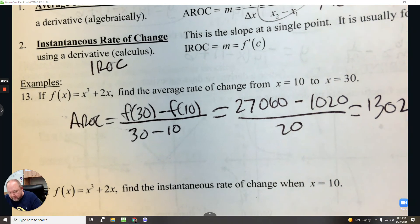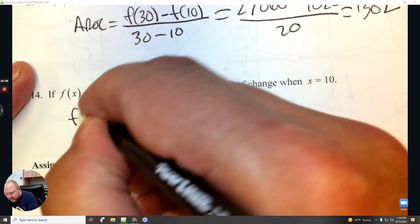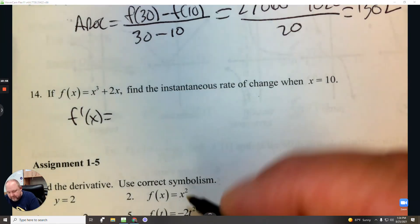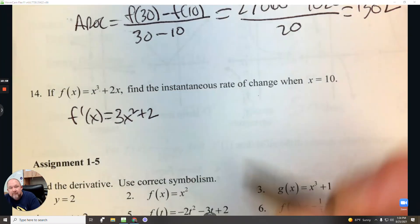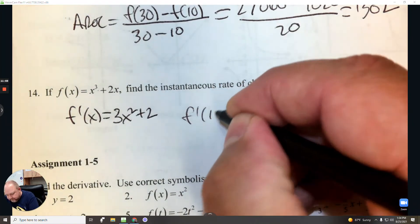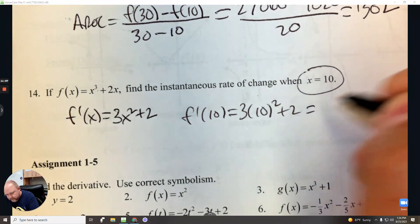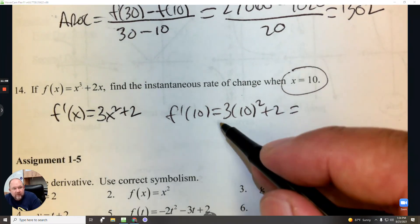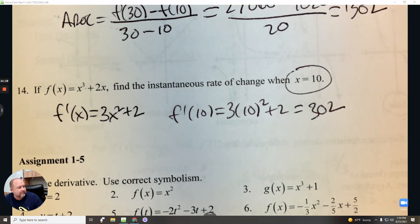For number 14, we're going to find the instantaneous rate of change. That's taking the derivative: 3x squared plus 2. And then you find the derivative at that value. So that's 300 plus 2. Done.